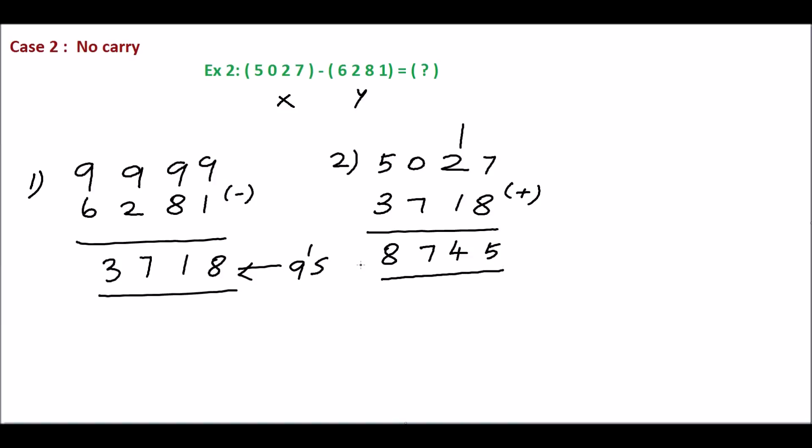In step 2, we don't have any carry, so take the 9's complement for the sum. The sum is 8745. Take the 9's complement by subtracting each digit from 9. 9 minus 5 is 4, 9 minus 4 is 5, 9 minus 7 is 2, 9 minus 8 is 1. And finally, assign negative sign. So the final answer is -12.54 base 10.